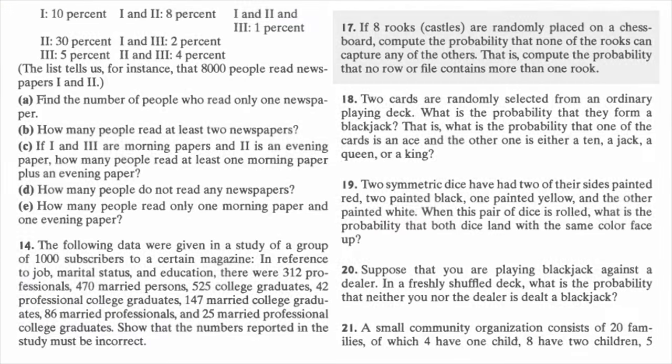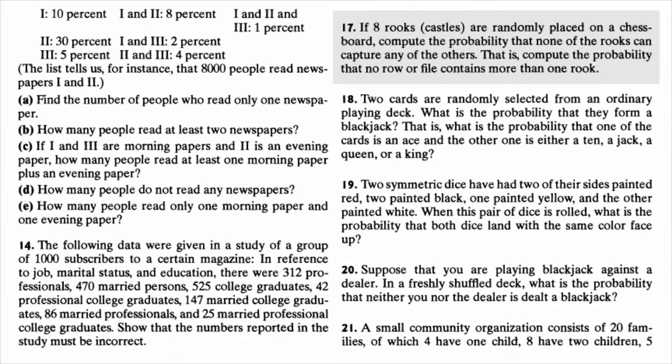Hi everyone. Welcome back to my YouTube videos. In this video, I'm going to solve exercise 2.17 of the textbook 'First Course in Probability'. We place 8 rooks at random on a chessboard and the goal is to find the probability that none of them can capture another one.